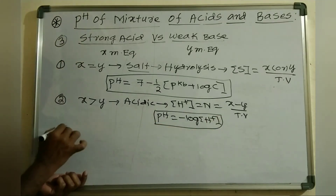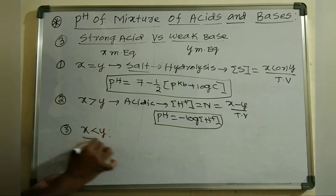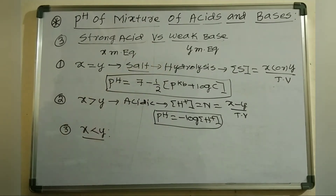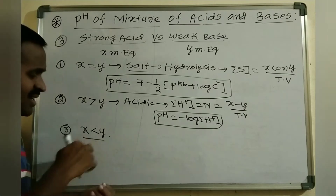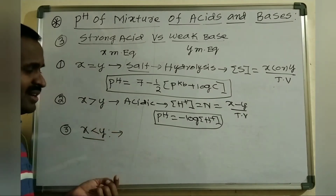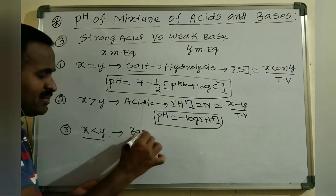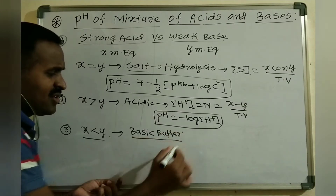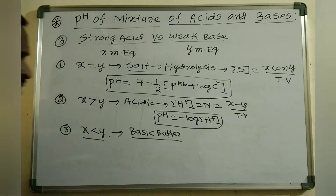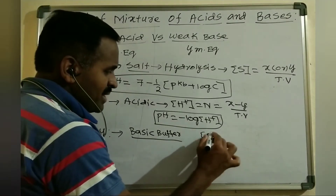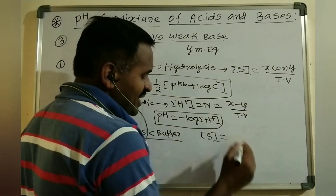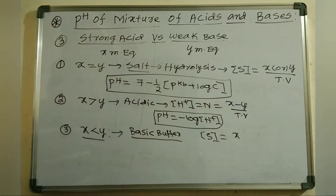Case 3: X less than Y — the weak base is dominating and is left over (unused) in the titration. Whenever the weak base is unused, it forms a basic buffer. The pH of this basic buffer is calculated using the Henderson equation. The salt concentration equals the milliequivalents of strong acid, X, divided by the total volume, because the strong acid is completely consumed as it is the limiting reagent.